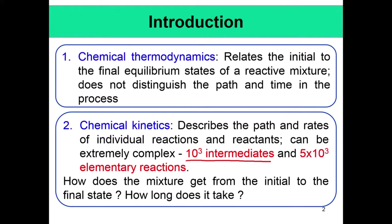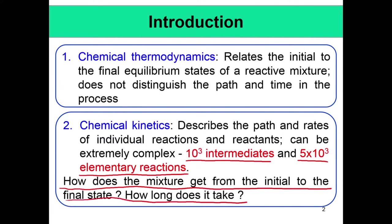These are just prototype numbers — it can go even larger. Combustion never happens in one step; it happens through a series of reactions. These reactions happen in series and in parallel, and the species involved have different timescales associated with them. As a result, chemical kinetics becomes very important. It tells you how the mixture gets from the initial to the final state and how long it takes.